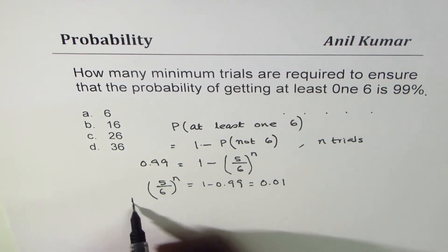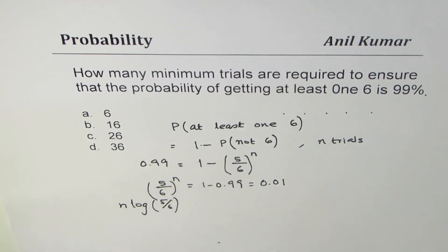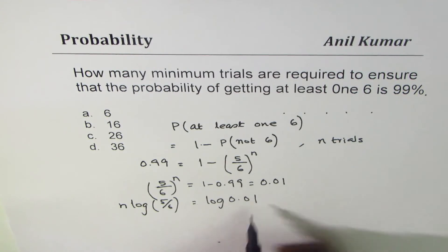This n comes like this—that's the property of log. So log of 0.01, and the value of n is log of 0.01 divided by log of (5/6).